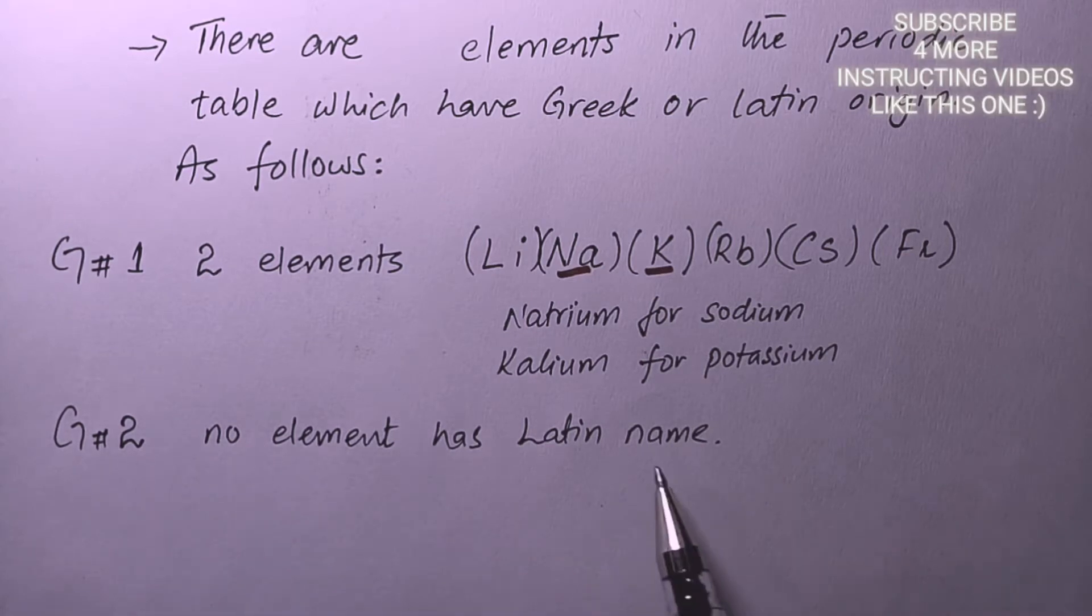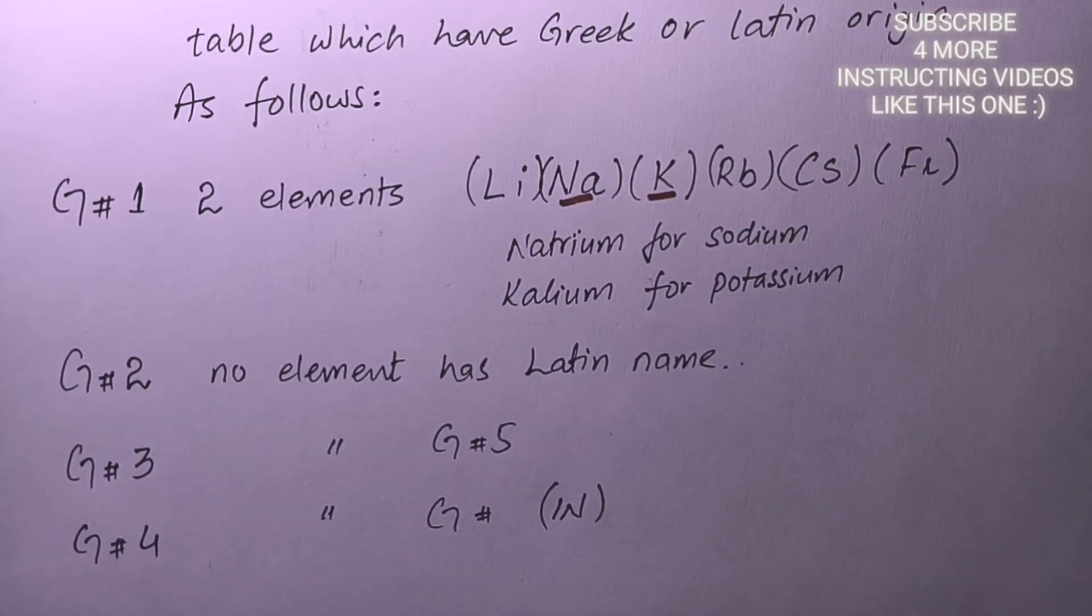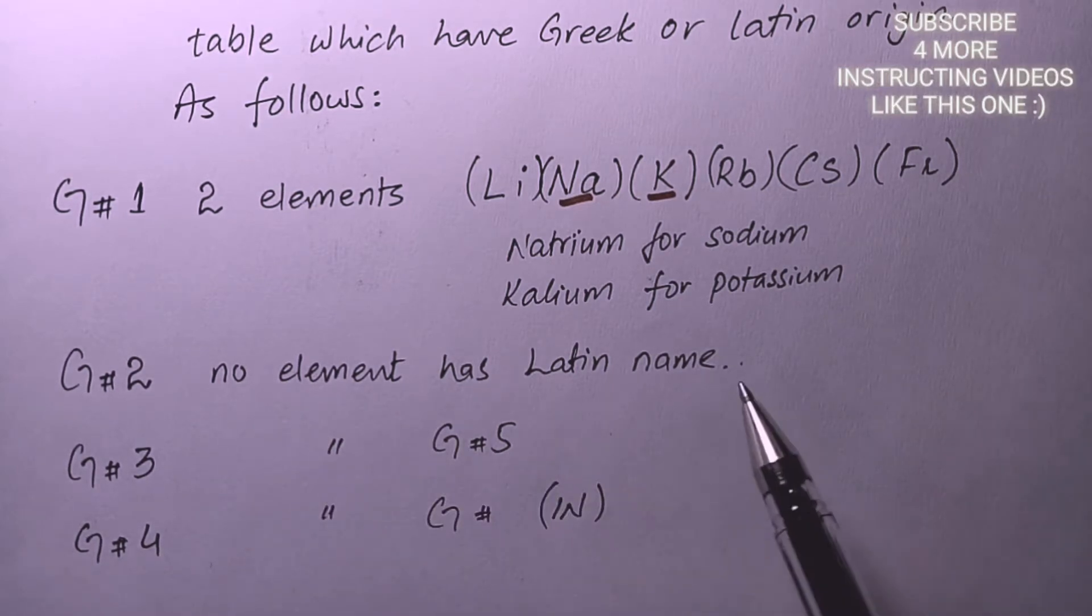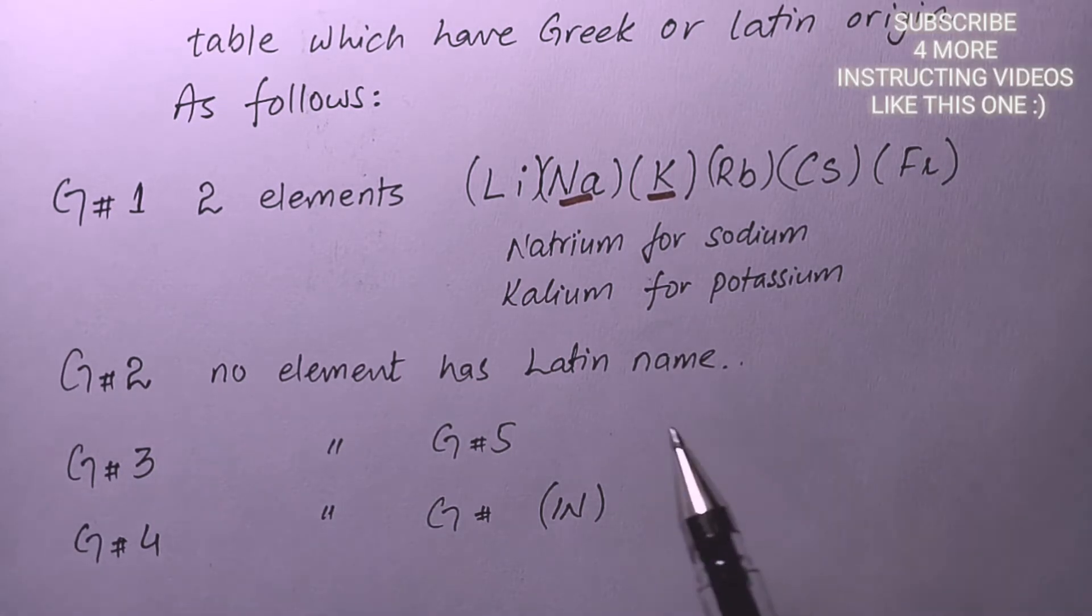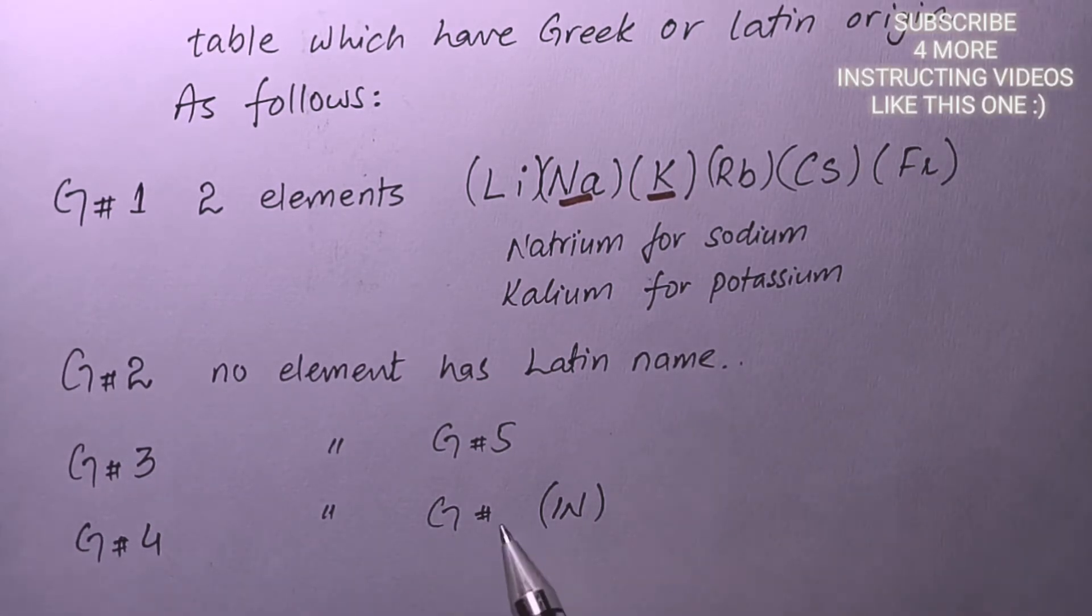In group 2 there is no element which possesses any kind of Latin name. In the same way, group 3 has no element which has a Latin name or Greek name. Group 4 has the same category, and group 5 also doesn't possess any kind of element with Latin or Greek name.